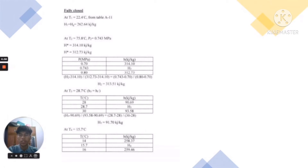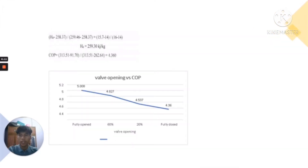For the fully closed valve, at T1 equal to 22.4°C, H1 is 262.64 kJ/kg. At T2 equal to 75.8°C with pressure equal to 0.743 MPa, H2 is 313.51 kJ/kg. At T3 equal to 28.7°C, H3 is 91.70 kJ/kg. At T4 equal to 15.7°C, H4 is 259.30 kJ/kg. The coefficient of performance is 4.360.